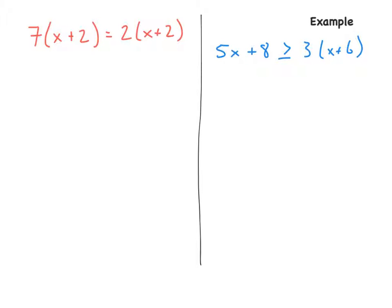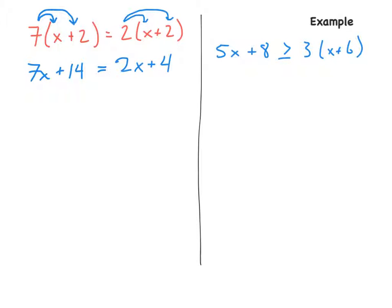All right, so let's try this first one. If we have seven times the quantity of x plus two is equal to two times the quantity of x plus two, let's first simplify the left side. Since we have a number next to parentheses, automatically do the distributive property. So seven times x is 7x, seven times two is 14. Now the right side: two times x is 2x, two times two is 4. Now we have 7x plus 14 is equal to 2x plus 4.